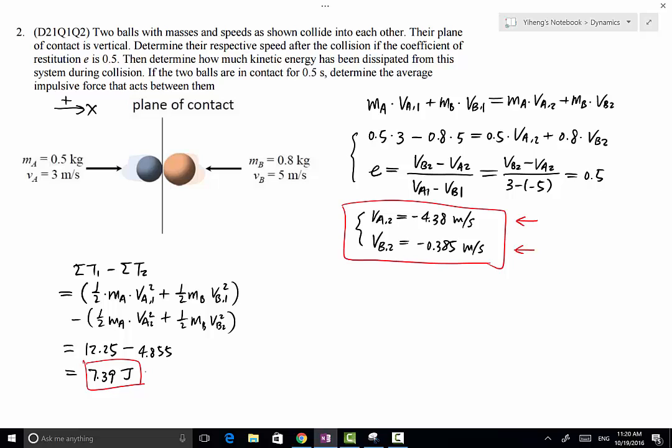We can also determine the average impulsive force that acts between the two balls. This is the force that ball A exerts on ball B, as well as the equal and opposite force that ball B exerts on ball A. Using the principle of linear impulse and momentum: the initial momentum MA·VA1 plus the impulse F·t equals the final momentum MA·VA2.